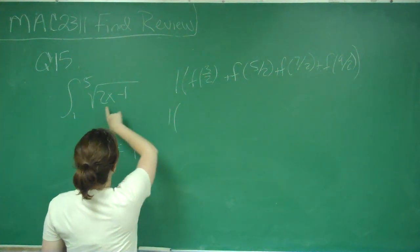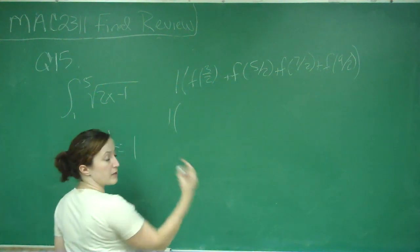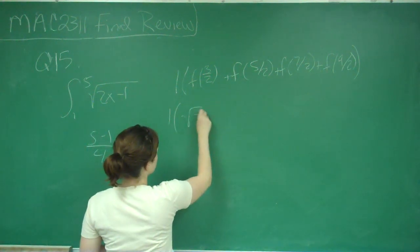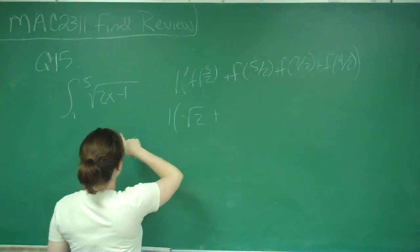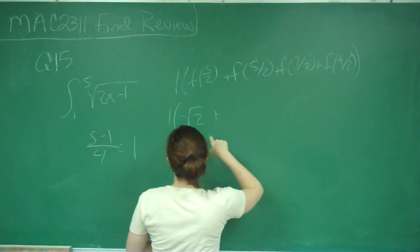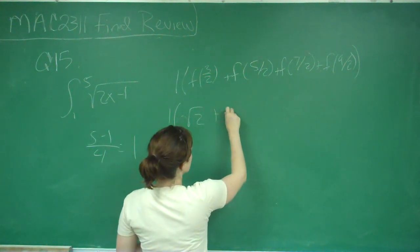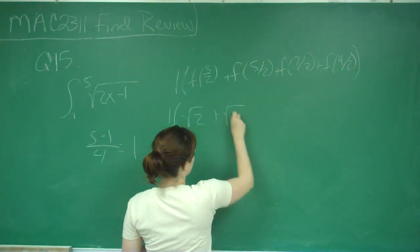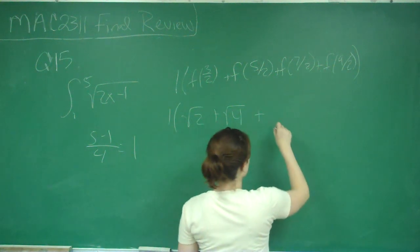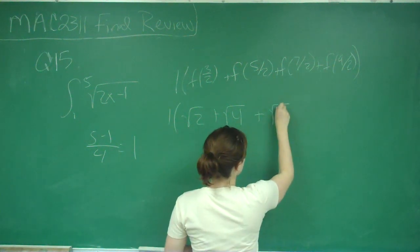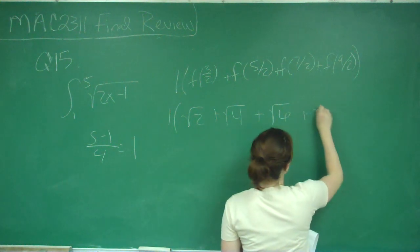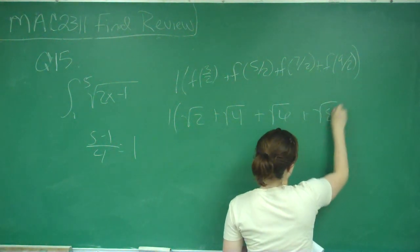So 3 halves plugged in gives me 2(3/2) minus 1, so that's the square root of 2. Then 5 halves gives me 5 minus 1, which is 4, so it's the square root of 4. Then 7 halves gives 7 minus 1, which is the square root of 6. And then 9 halves gives 9 minus 1, which is the square root of 8.